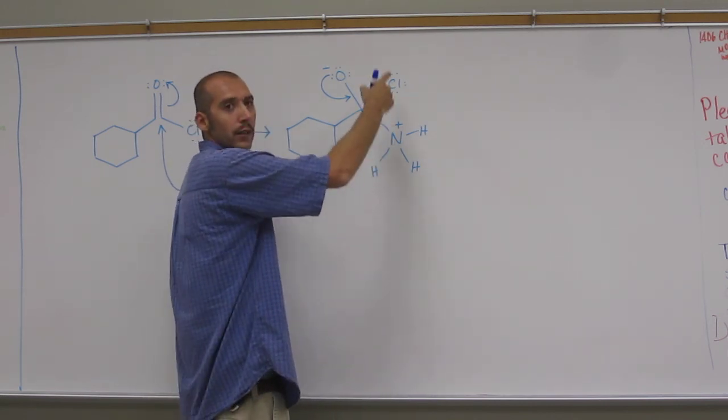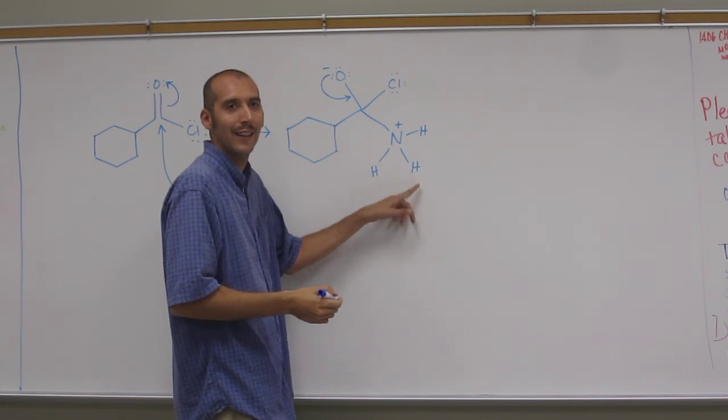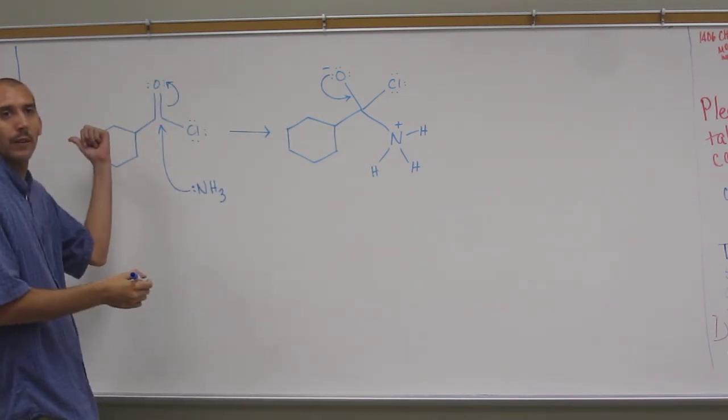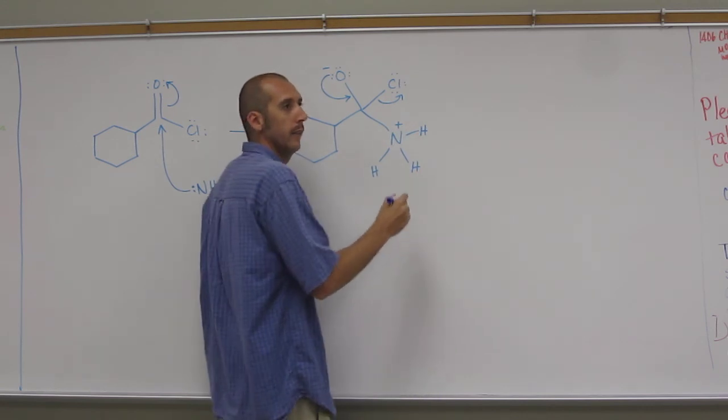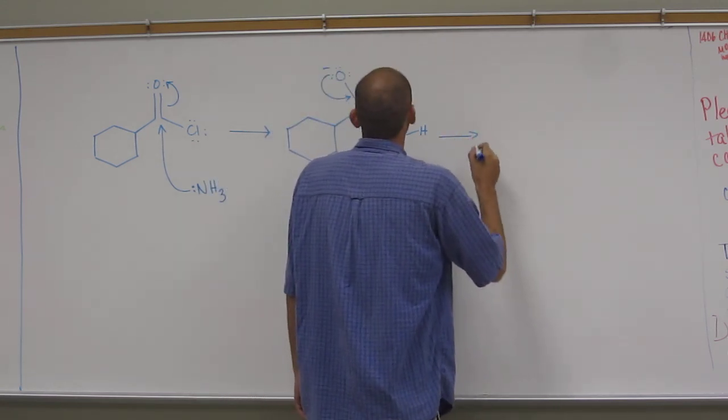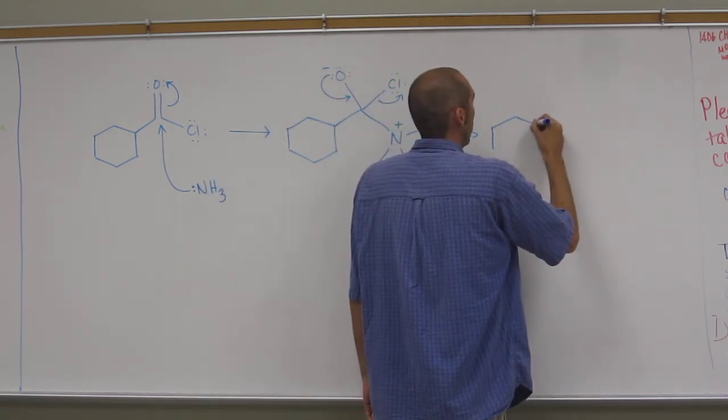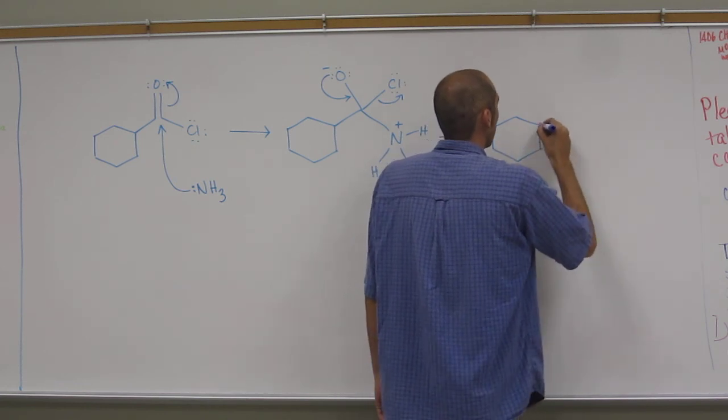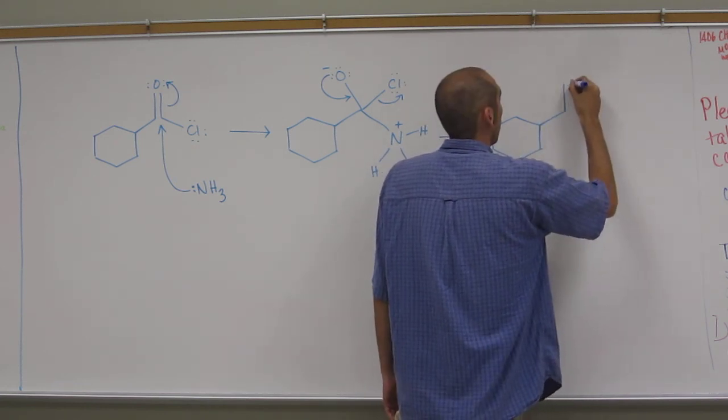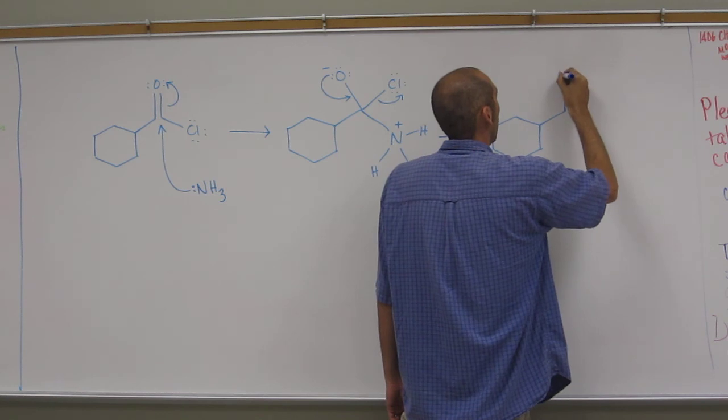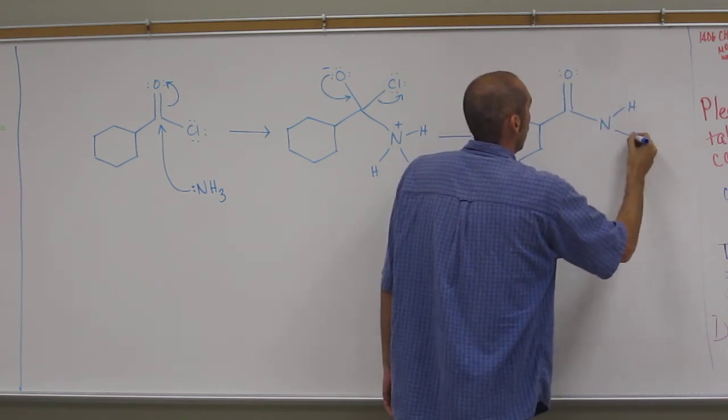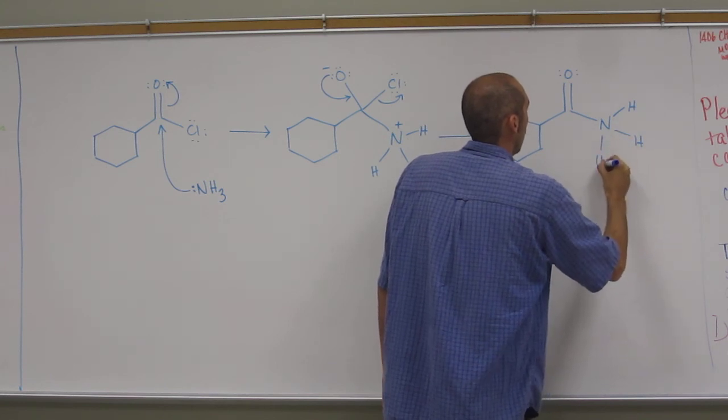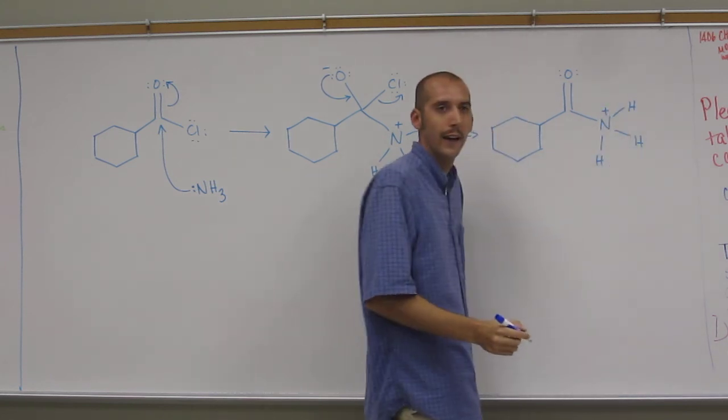Either one of these is a good leaving group, but if we kick this out, then we just go back this way. We did nothing. So we're going to kick that out like that. So that progresses the reaction. Like that, and then we've got Cl, right?